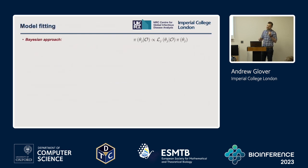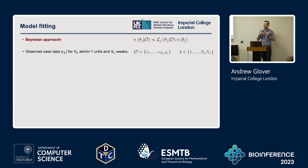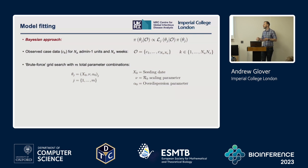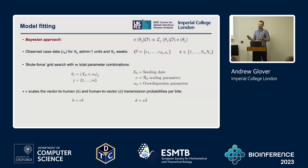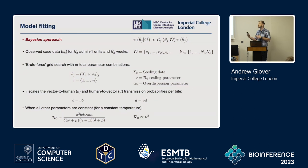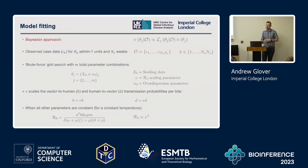I took a Bayesian approach, with weekly case data over admin-one units for Colombia, using a brute force approach fitting over a discretized grid for the seeding date, the reproductive number scaling parameter, and an overdispersion parameter. Nu scales the vector-to-human and human-to-vector transmission probabilities per bite, and the basic reproductive number is proportional to nu squared when all other parameters are constant, also scaling the time-dependent reproductive number.